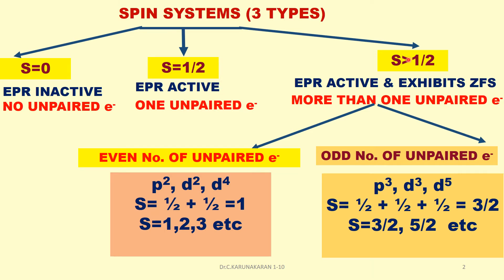The third case is S greater than half, meaning more than one unpaired electron. In this case the system is EPR active, and these spin systems also exhibit zero field splitting.